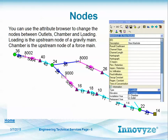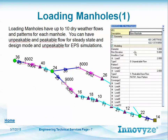You can change the nodes in the attribute browser between loading, chamber, and outlet. Loading manholes are where you put in the point flows or coverage flow — it has up to ten different loads, plus an additional database table for other flows. The data needed for a manhole is simple: just a diameter and a rim elevation. It will calculate the invert of the manhole from the connecting links. Normally we use zero for the loss coefficient.